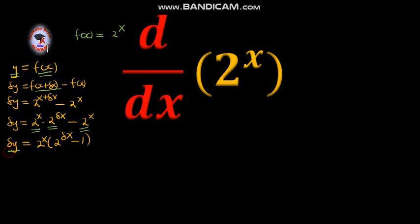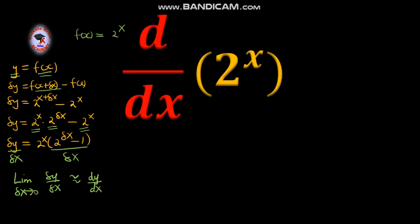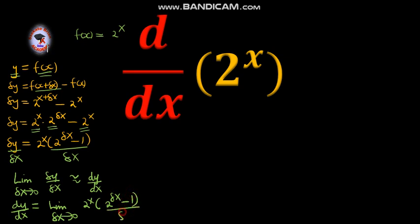Then we divide by δx. And we have the limit as δx tends to 0 of δy over δx, which is approximately dy/dx. Therefore, dy/dx equals the limit as δx tends to 0 of 2^x times (2^(δx) minus 1) over δx.